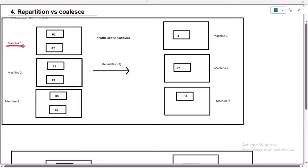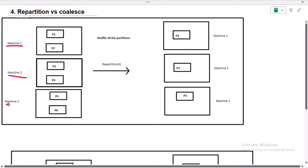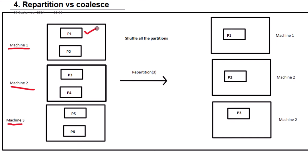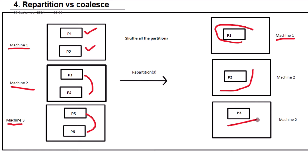The first diagram indicates repartition. Let's assume we have three machines: machine one, machine two, and machine three. Each machine has two partitions — partition one and two in machine one, three and four in machine two, and five and six in machine three. The requirement is we want to do repartition of all six partitions and create only three partitions, as you can see in the output.